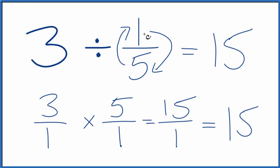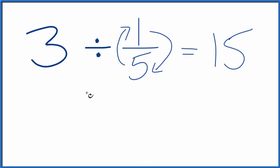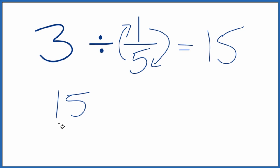15 times 1 fifth, that should give us 3. Let's try it. So we take 15, and let's call it 15 over 1, and we're going to multiply that by our fraction, 1 fifth.